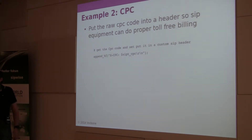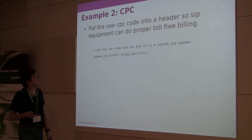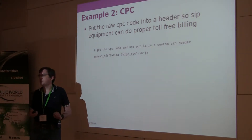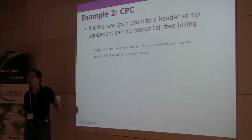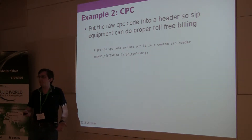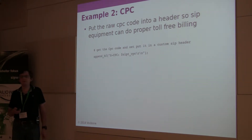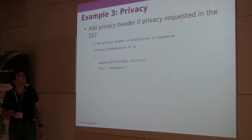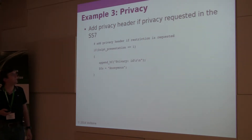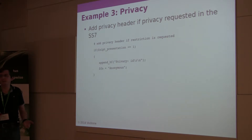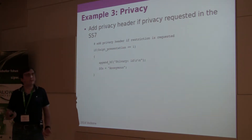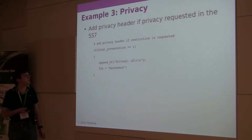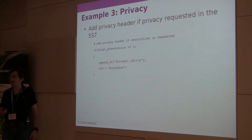Another example is getting CPC information from toll-free numbers. You can get the calling party category from the SS7 message, then add it to a special SS7 SIP header or a URI parameter, so your downstream SIP equipment can know the proper charging rate for a toll-free call. Another case is checking the SS7 messages for privacy information — does a caller want their identity withheld? You can see that and make sure your SIP equipment is properly adding privacy headers or doing anonymization as needed.